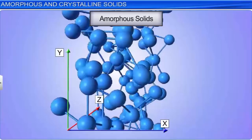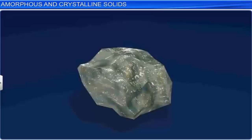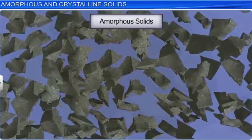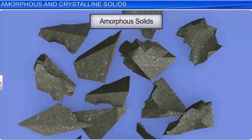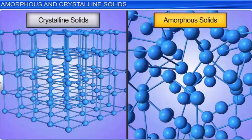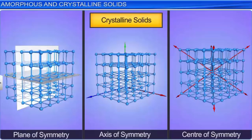If a crystalline solid is broken into pieces, the small constituents will have the same smooth and plain surfaces. Crystalline solids have definite heat of fusion values, while amorphous solids do not. Another important property is symmetry: crystalline solids show plane of symmetry, axis of symmetry, and center of symmetry, whereas amorphous solids do not show any symmetry.